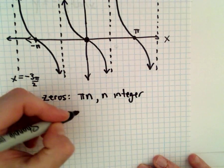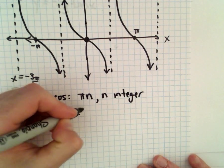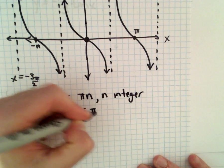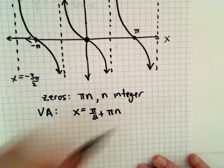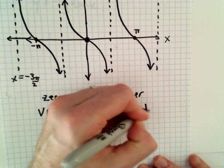Those are going to occur at x equals pi over 2 plus multiples of pi, so we'll say pi over 2 plus pi n, again where n is an integer.